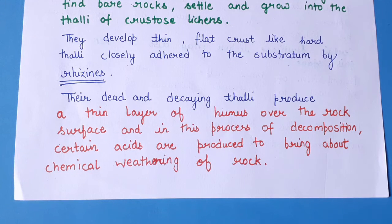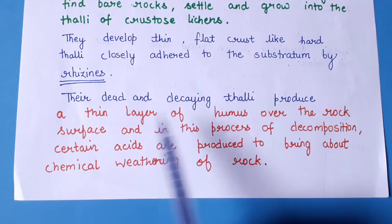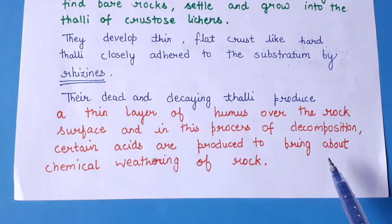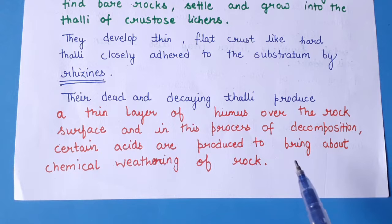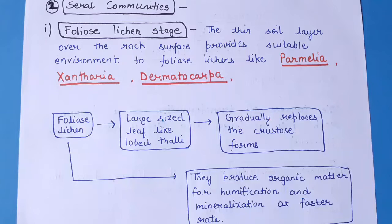As the crustose lichens grow over the rock surface and continue to die, their dead and decaying thalli produce a thin layer of humus over the rock surface. During decomposition, certain acids are produced that bring about the weathering of rocks, producing cracks within the rock that will be suitable for the growth of other communities.